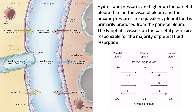Hydrostatic pressures are higher on the parietal pleura than on the visceral pleura, while the oncotic pressures are equivalent. Therefore, pleural fluid is primarily produced from the parietal pleura, and the lymphatic vessels on the parietal pleura are responsible for the majority of pleural fluid reabsorption.